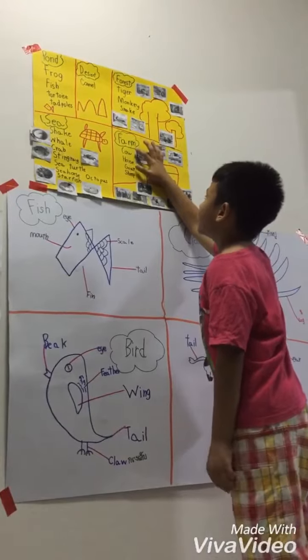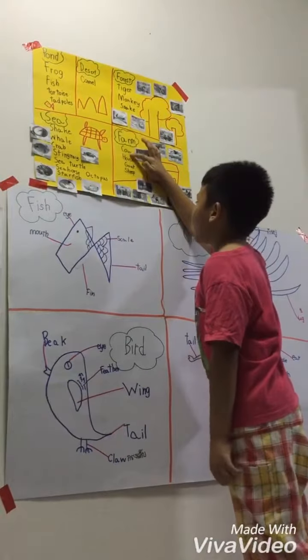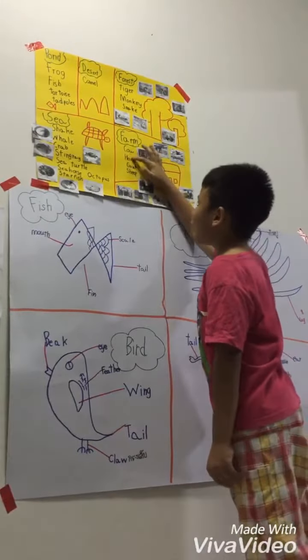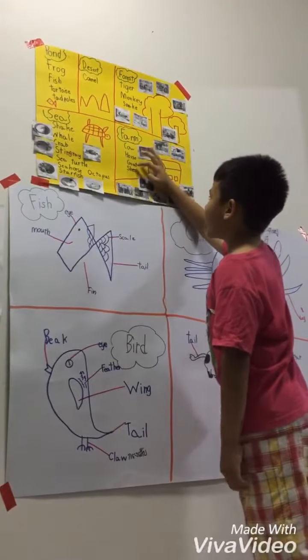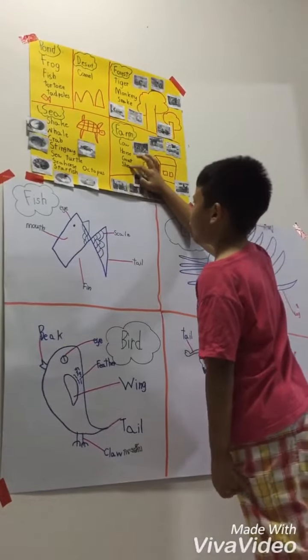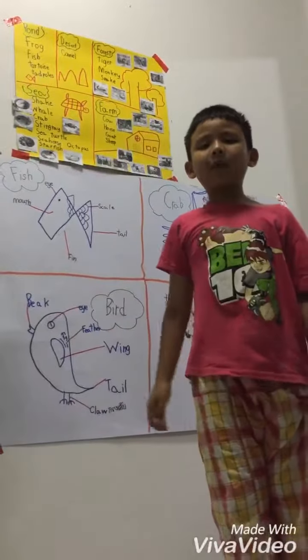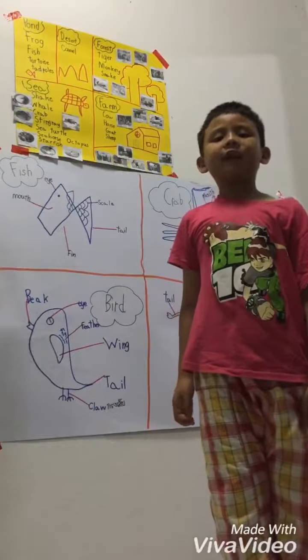Farm. Number one, cow. Number two, horse. Number three, goat. Number four, sheep. Let me tell you about parts of animal.